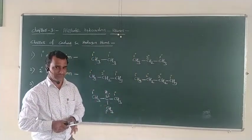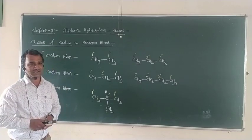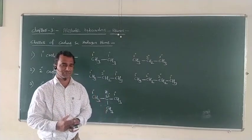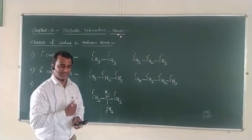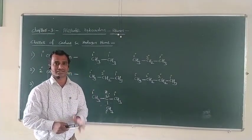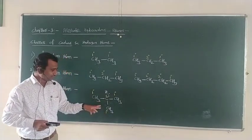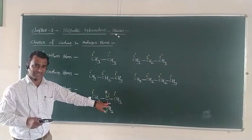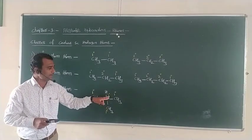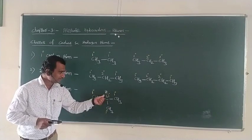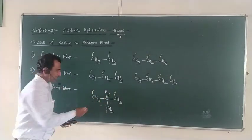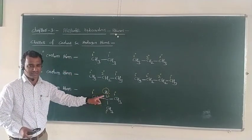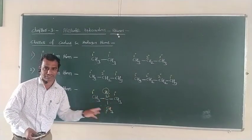The last class is the tertiary hydrogen atom. The hydrogen atoms which are attached to the tertiary carbon atom are called tertiary hydrogen atoms. For example, in the molecule CH3–CH(CH3)–CH3, the second carbon is the tertiary carbon atom. Only one hydrogen is attached to this tertiary carbon, so that one hydrogen is called the tertiary hydrogen atom. All remaining hydrogens in this molecule are primary hydrogen atoms.